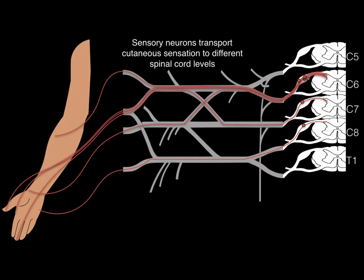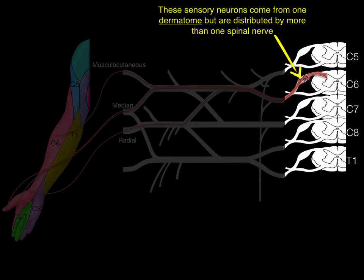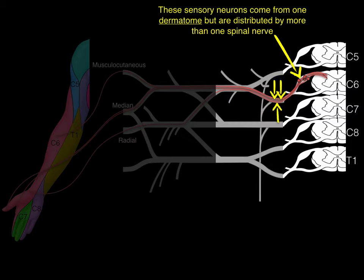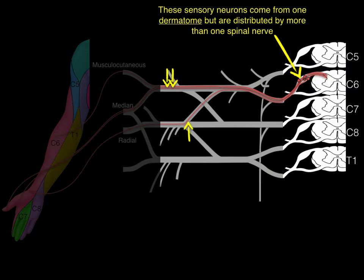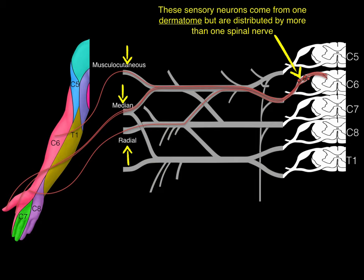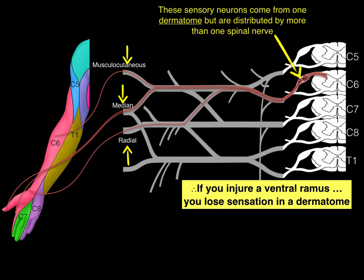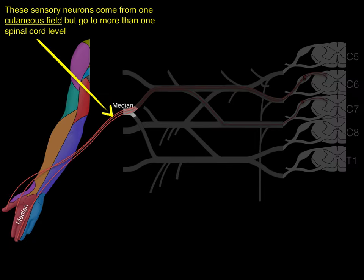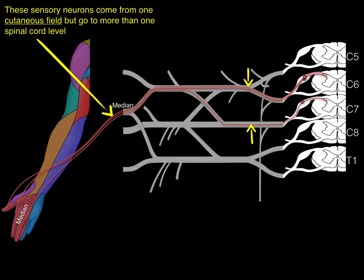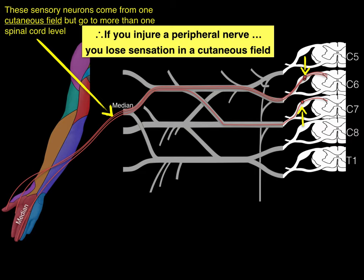Here we have all the major cutaneous fields you need to know and the nerves that they're hitting in the brachial plexus. Sensory neurons from one dermatome are distributed by more than one peripheral nerve. We follow those sensory neurons — they divide into the lateral cord, posterior cord — going to three different nerves. If you injure a ventral ramus, you lose sensation in the entire dermatome, regardless of how many different nerves carry those sensory neurons. Conversely, sensory neurons from one cutaneous field go to more than one spinal cord level. If you injure a peripheral nerve, you lose sensation in the entire cutaneous field.